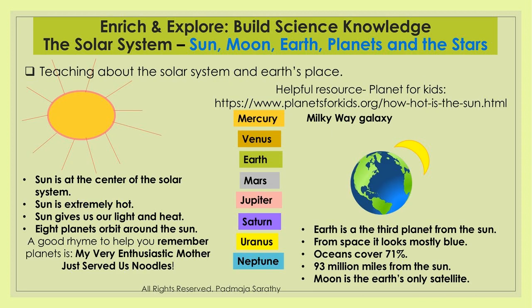In the younger grades and lower elementary, you may want to consider learning about the solar system — the sun, moon, Earth, planets, and stars. There is a book called Papa, Please Get the Moon for Me by Eric Carle — a beautiful preschool book you can read even to three-year-olds. It shows the little girl wanting her father to bring her the moon, and how he climbs a ladder to get it. The moon gets smaller and smaller, showing the different faces of the moon from new moon to full moon. It's science combined with an enduring story. You can teach about the solar system and the Earth's place in it.